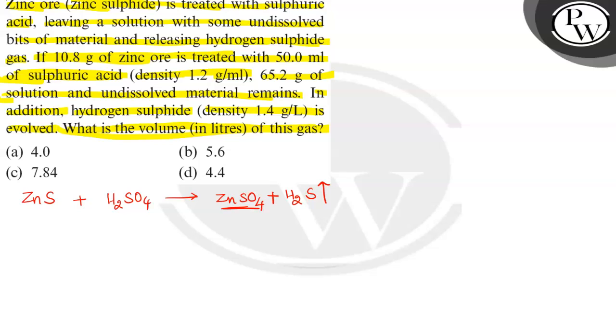Now, what is the mass of this zinc ore? Mass of zinc sulfide ore is 10.8 grams. And the mass of sulfuric acid? Mass is not given, but sulfuric acid volume is 50 ml and density is given.